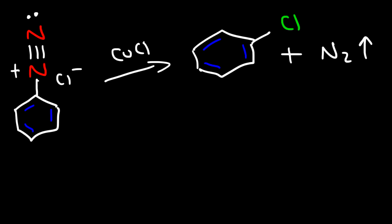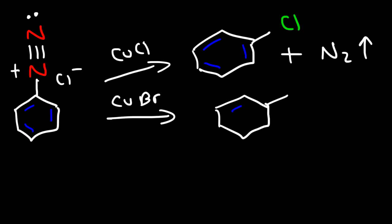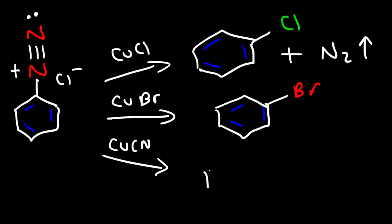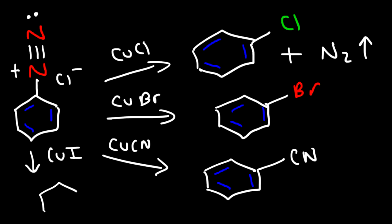There are other Sandmeyer reactions to be aware of. Reacting with copper bromide replaces the N2 group with a bromine atom, giving bromobenzene. We can also react it with copper cyanide to get a CN group. In addition, reacting with copper-1 iodide replaces the N2 group with iodine — you could also use potassium iodide, as both give the same product.